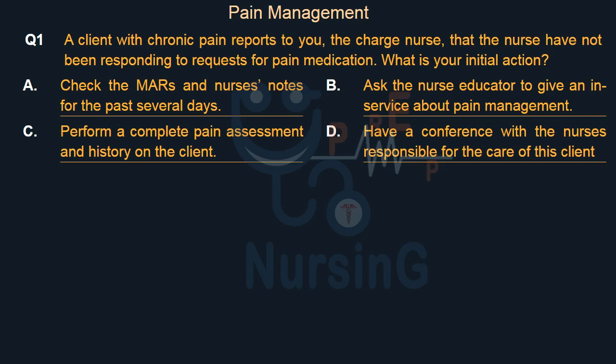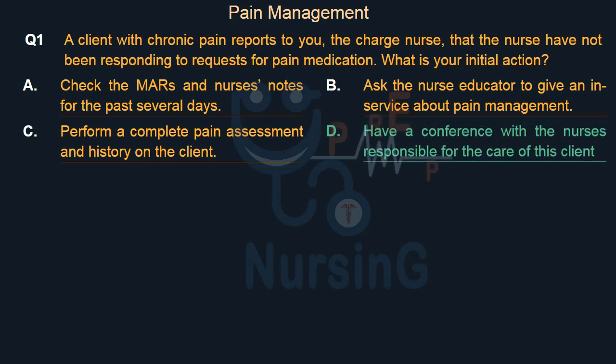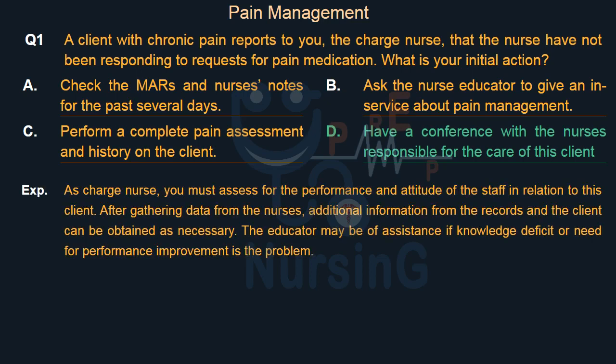Right answer is Option D: Have a conference with the nurses responsible for the care of this client. As charge nurse, you must assess the performance and attitude of the staff in relation to this client. After gathering data from the nurses, additional information from the records and the client can be obtained as necessary.